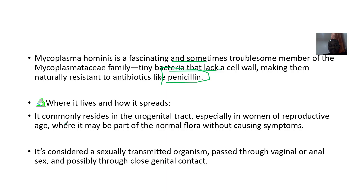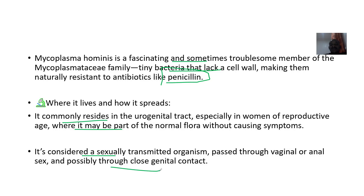In terms of where it lives and how it spreads, it commonly resides in the urogenital tract, especially in women of reproductive age. It becomes part of the normal flora — the normal organisms present in your urogenital tract. It is considered a sexually transmitted organism; it can pass through vaginal and anal sex, possibly through close genital contact.